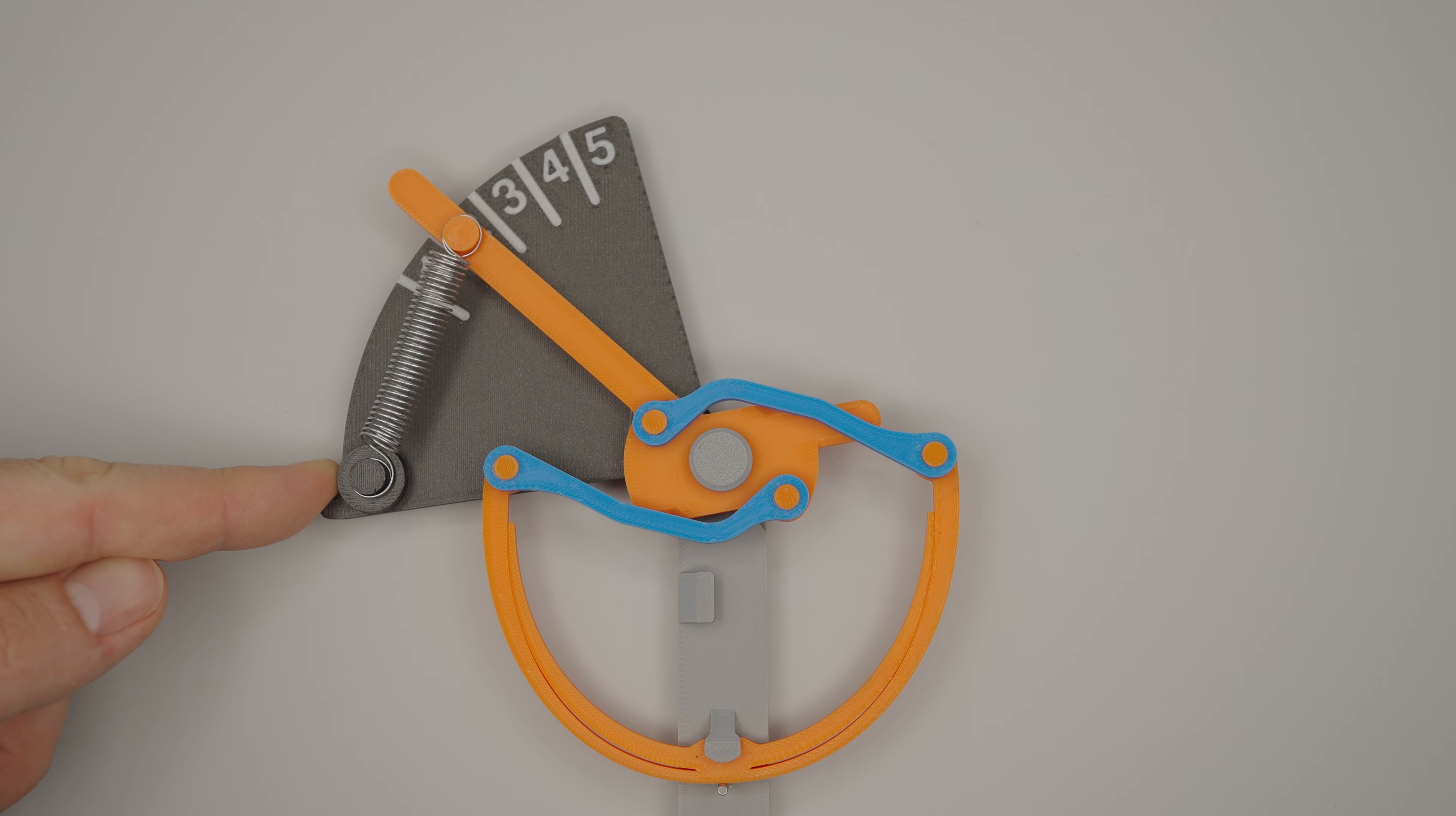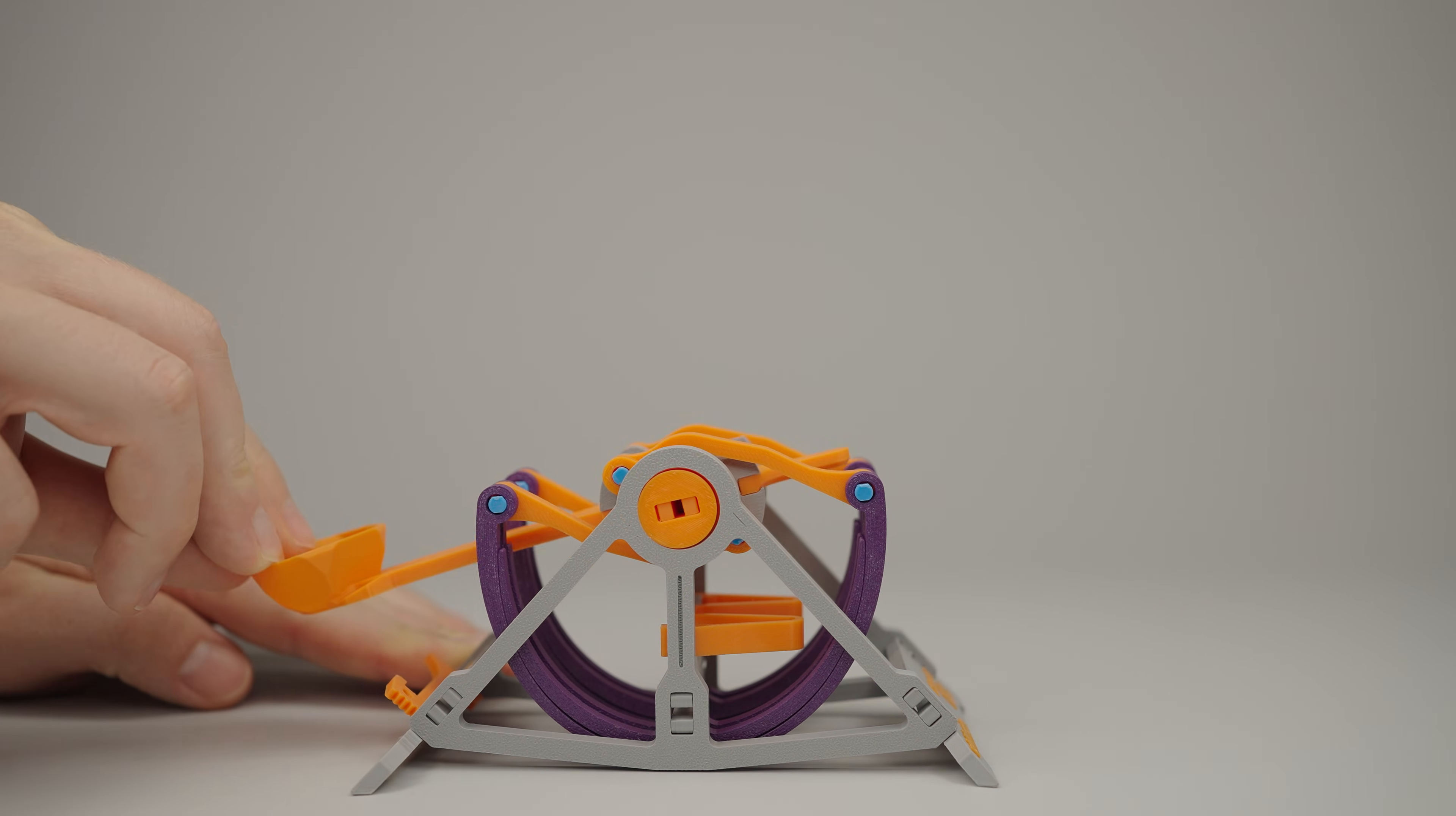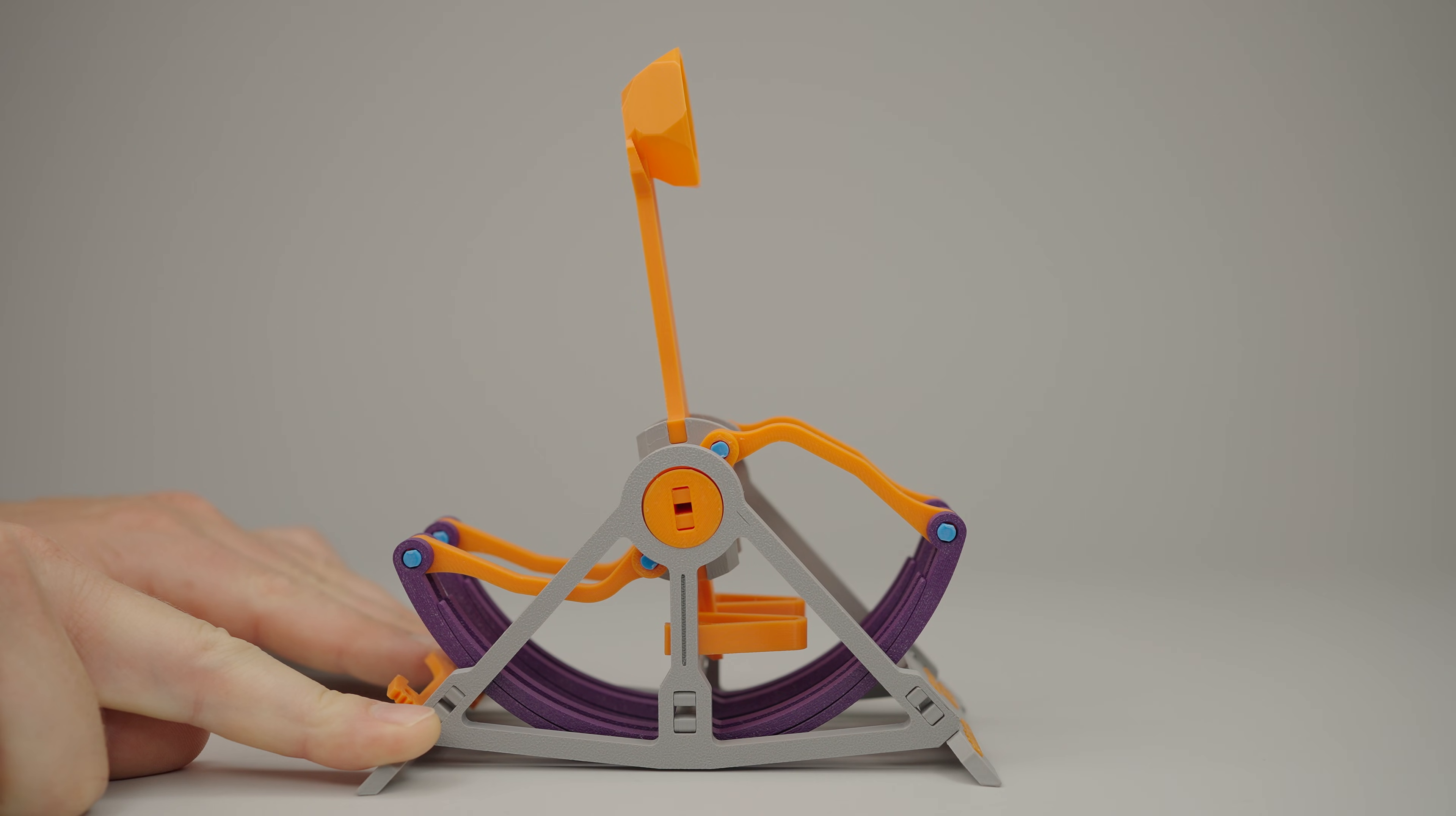This leads us to the advantages of this kinematic design. First, when the catapult is drawn, the trigger requires very little force to hold it, making it easy to release with minimal effort. Additionally, the catapult will launch farther if the maximum force is applied not at the start, but at an angle of about 45 degrees.